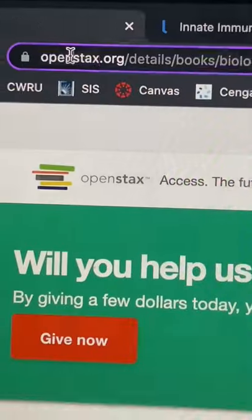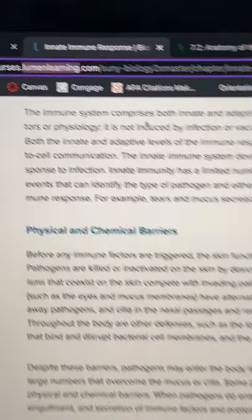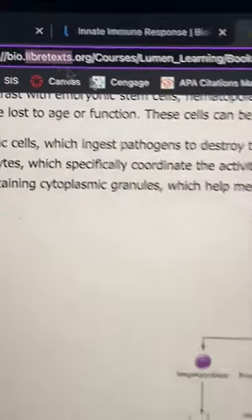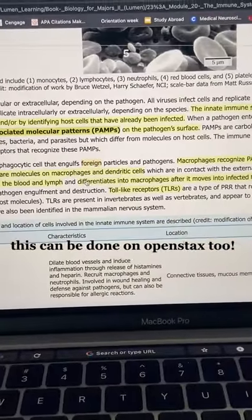Some of the websites that I recommend using include OpenStax, Lumen Learning, and LibreText. I especially like LibreText because you're able to annotate and highlight directly on the online textbook.